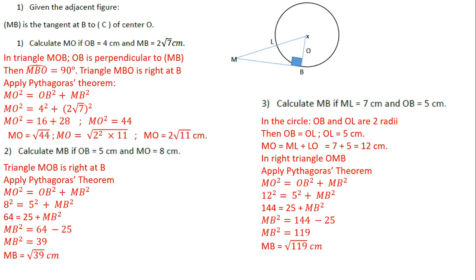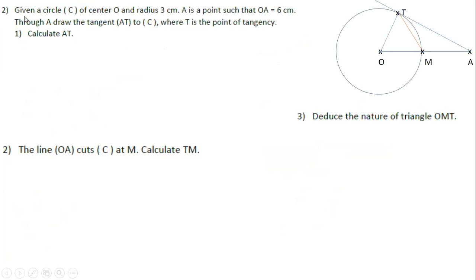As you can see in this question we applied the Pythagorean theorem in many different situations. Exercise number 2: given a circle C of center O and radius 3 cm, and a point A outside the circle such that OA = 6 cm. Through A we draw the tangent to the circle, AT, where T is the point of tangency. We should calculate the measure of AT.